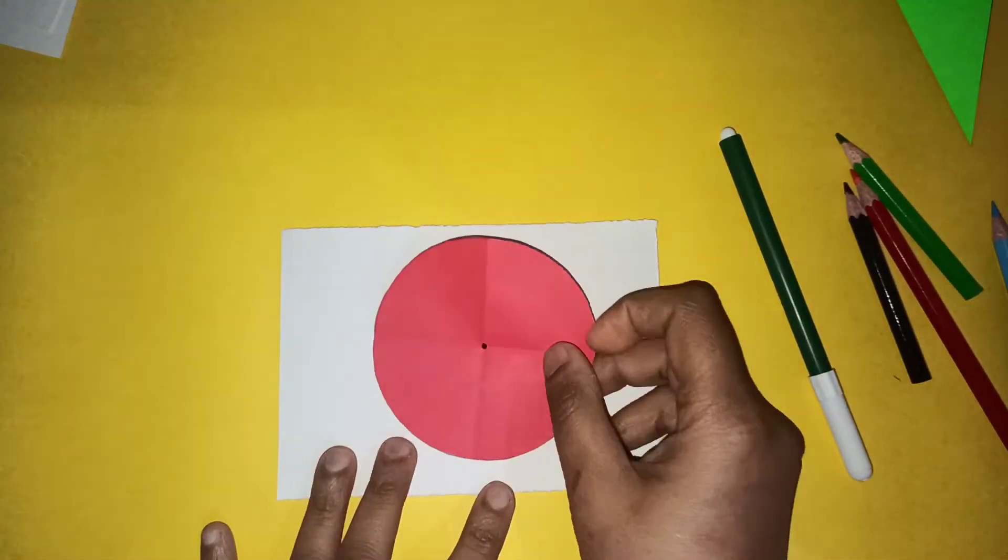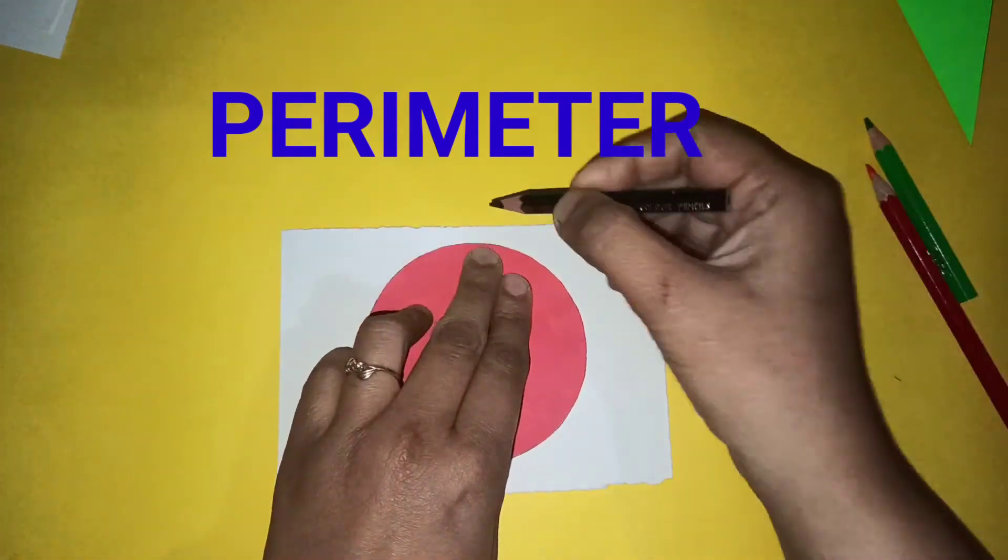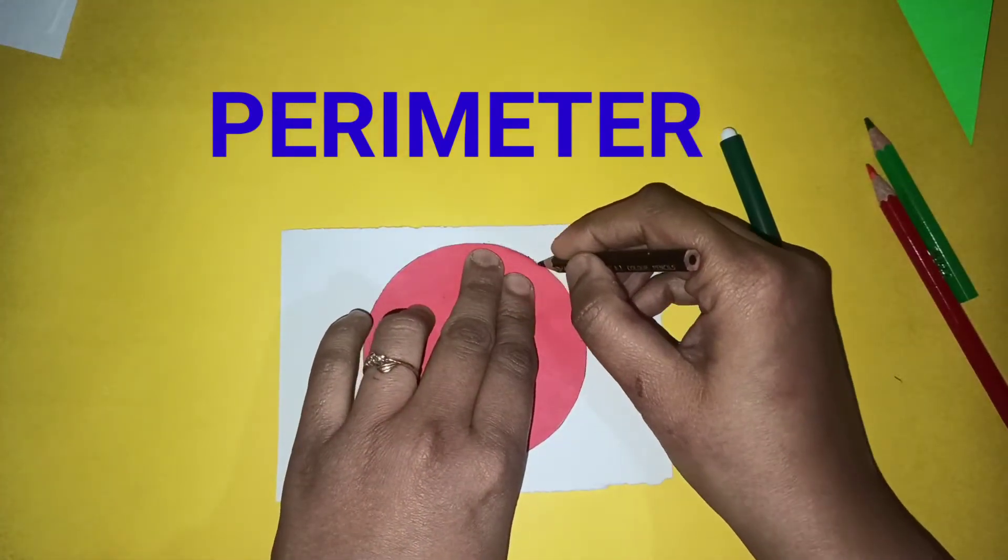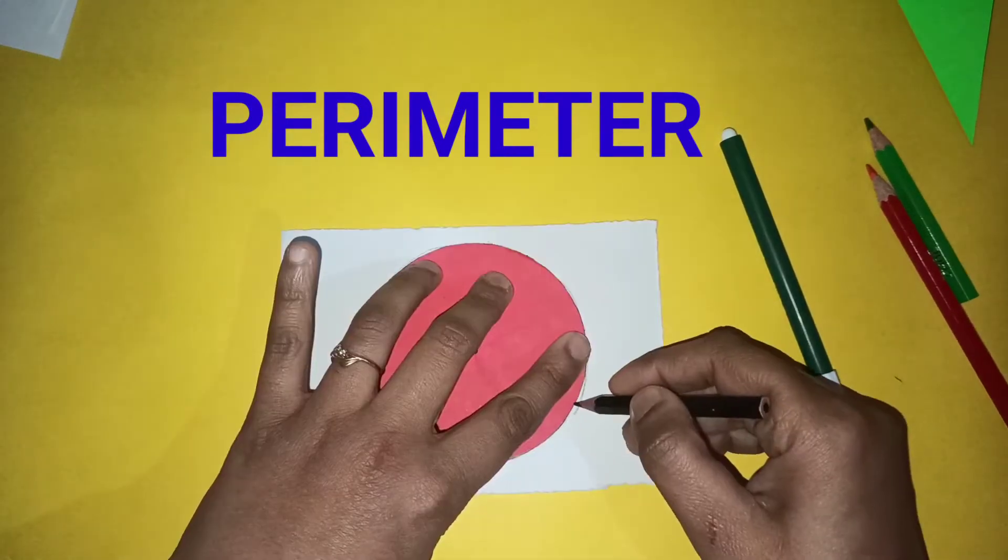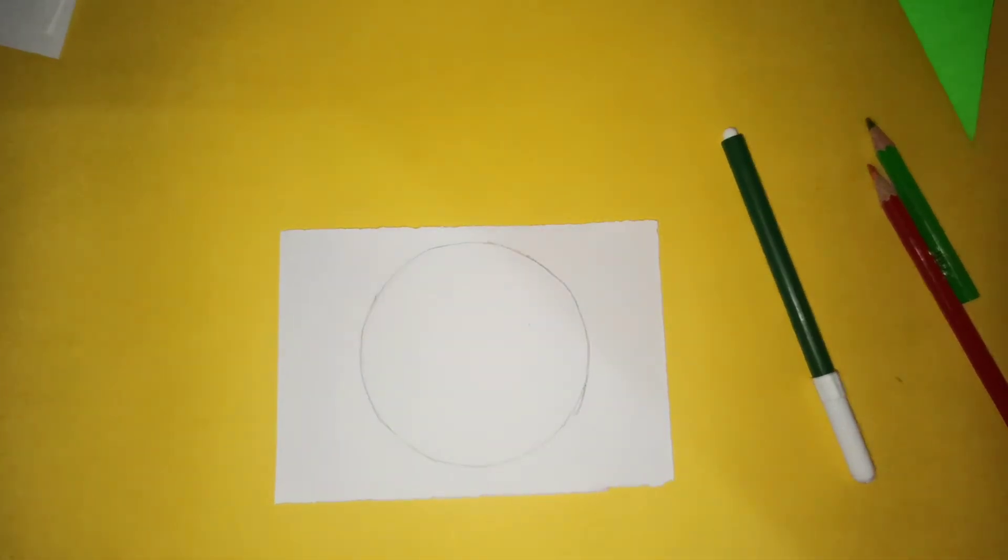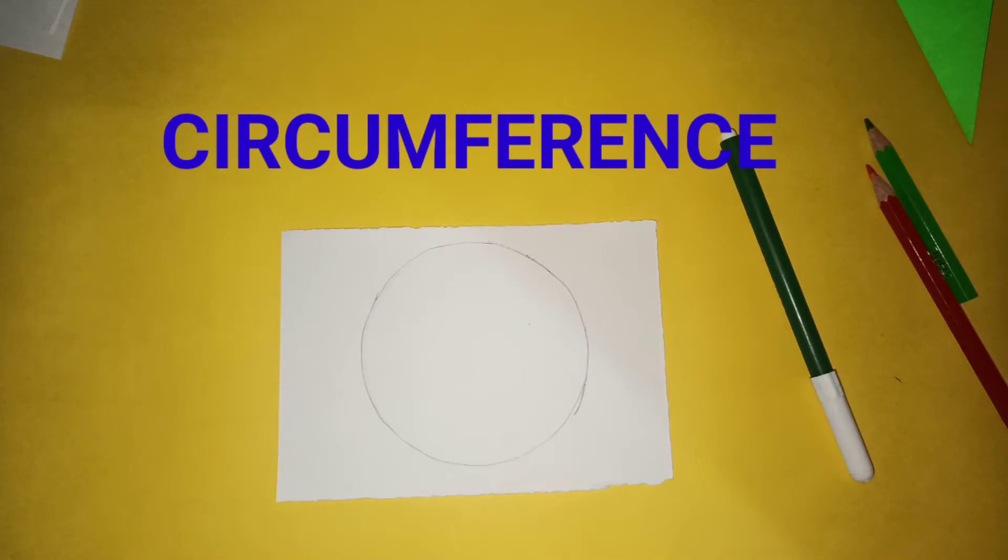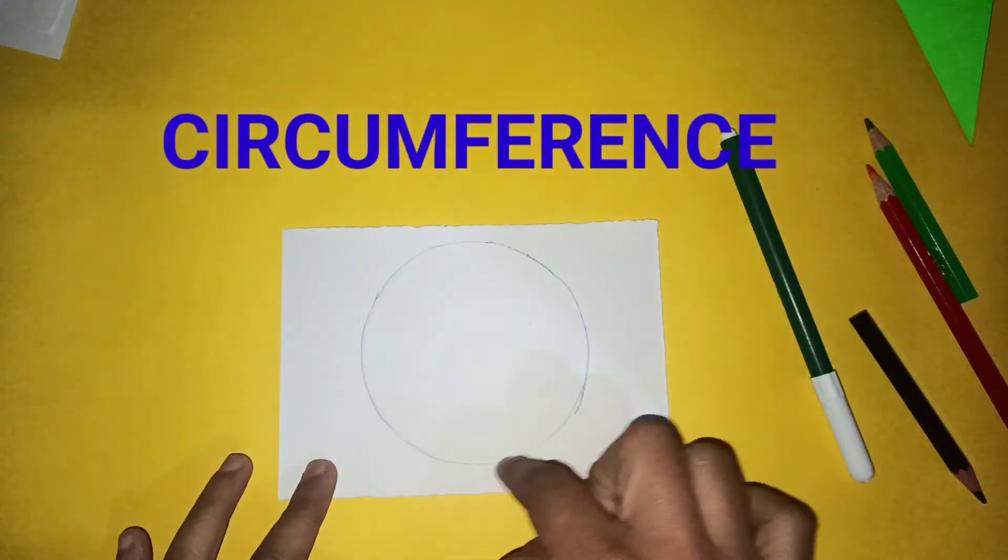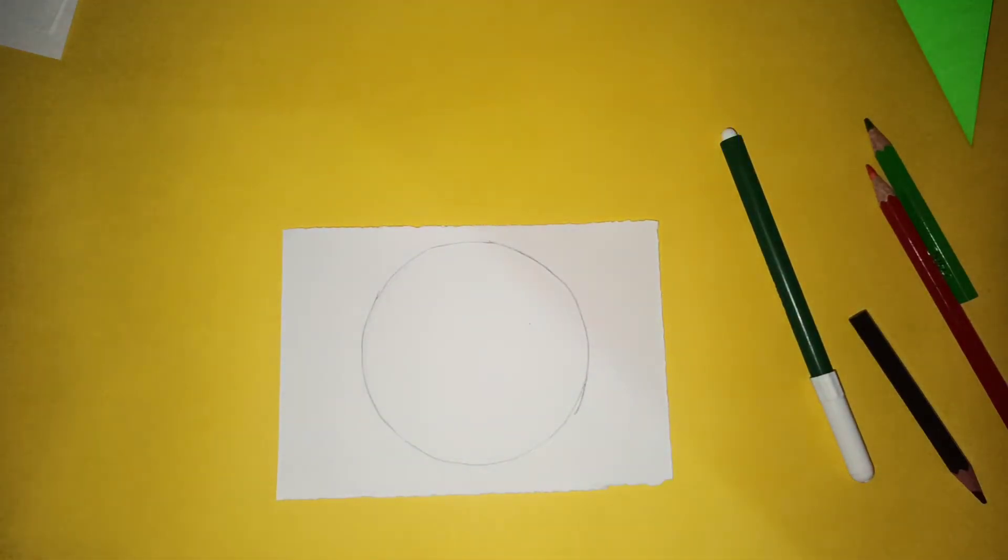Now let's talk about the perimeter of this circle. This is the perimeter of the circle, and there is a special name for it. It is known as the circumference of the circle. So this black line is the perimeter or circumference of the circle.